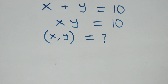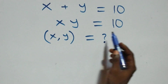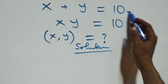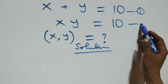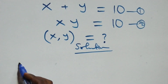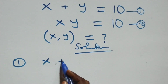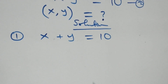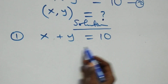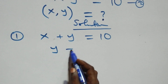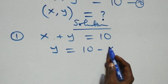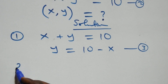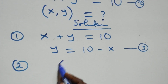Hello, you're welcome. How to solve this nice algebra equation. From here, we label the first as equation one and the second as equation two. From equation one, which is x plus y equals to ten, we make y a subject by taking x to the other side, giving us y equals to ten minus x, and we label this as equation three.